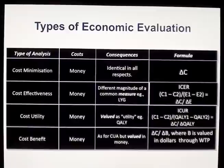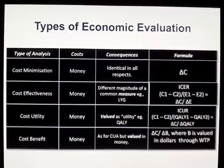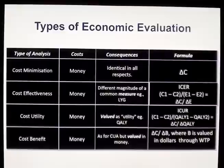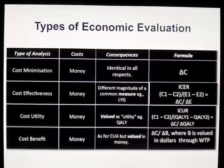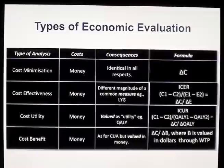Cost-effectiveness analysis involves looking at dollars per consequence, where the consequence is measured in different magnitudes of a natural unit — for example, life years gained. Cost-effectiveness calculates the ICER, which is the delta C over the delta E for two alternatives. Cost-utility analysis is a special form of cost-effectiveness analysis where consequences are valued as utilities, calculating quality-adjusted life years (QALYs), and the result is the incremental cost-utility ratio: delta C over delta QALY.